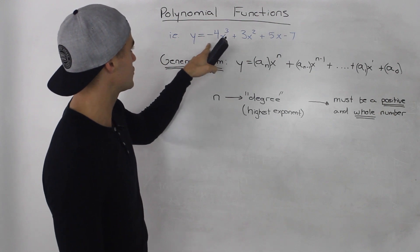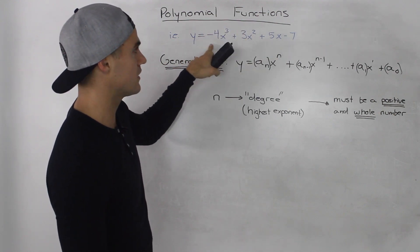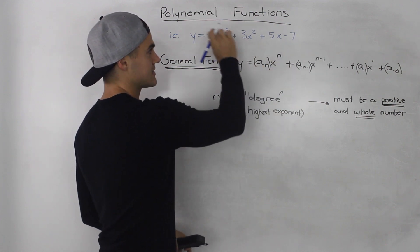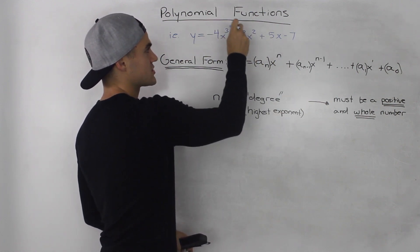So for example, if we go to the example we gave here, the degree or the n value is the highest exponent in this polynomial, which is this 3 here.